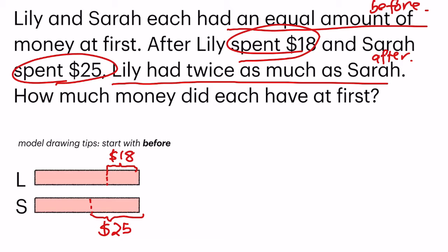And then now they said Lily had twice as much. So let's look at Lily's remainder portion of her model, which is this part. This part is twice bigger than what Sarah had. Which means Lily's portion is 2 units. As for Sarah, Sarah had 1 unit.